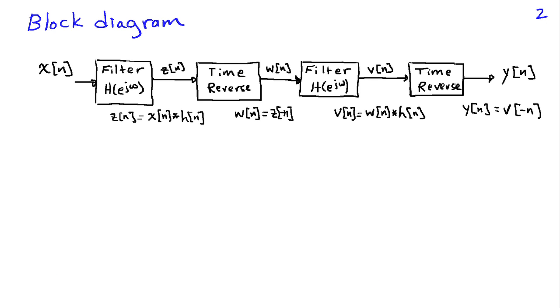We've got a block diagram here where we're showing this sequence of operations required to get zero phase filtering. So we begin by taking our input signal x[n], we filter it with H(e^jω) to get an output z[n], which is just the convolution of the impulse response with x[n].